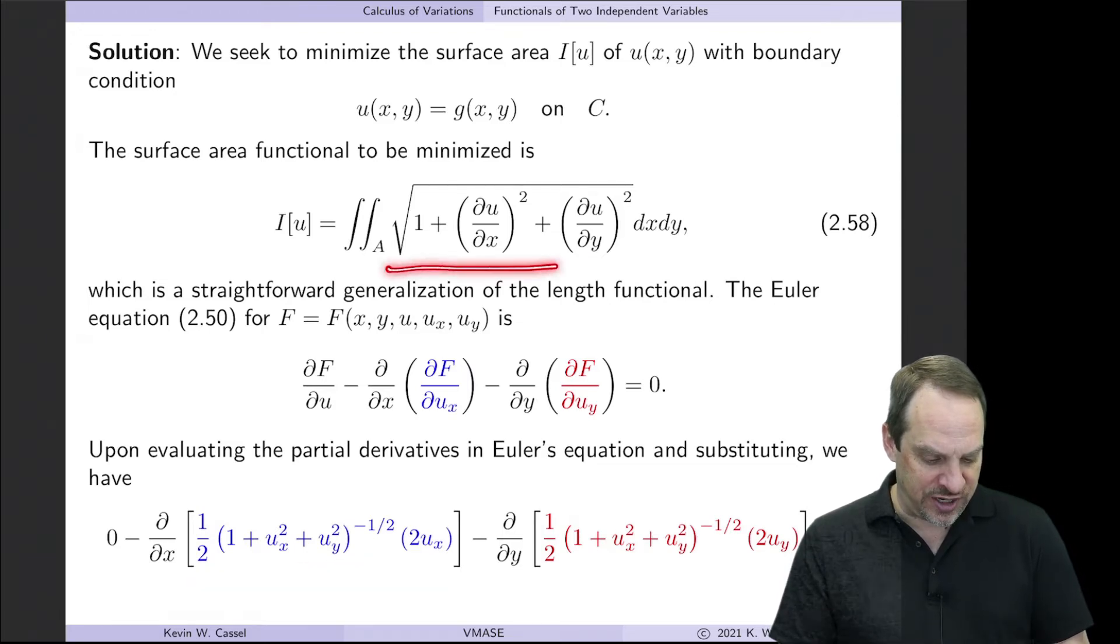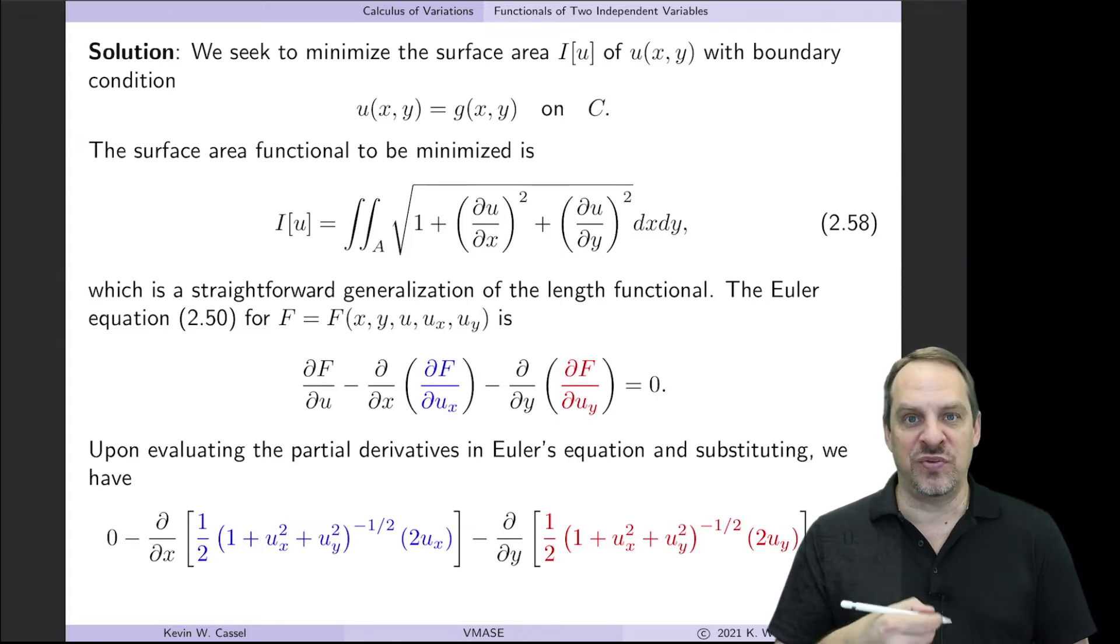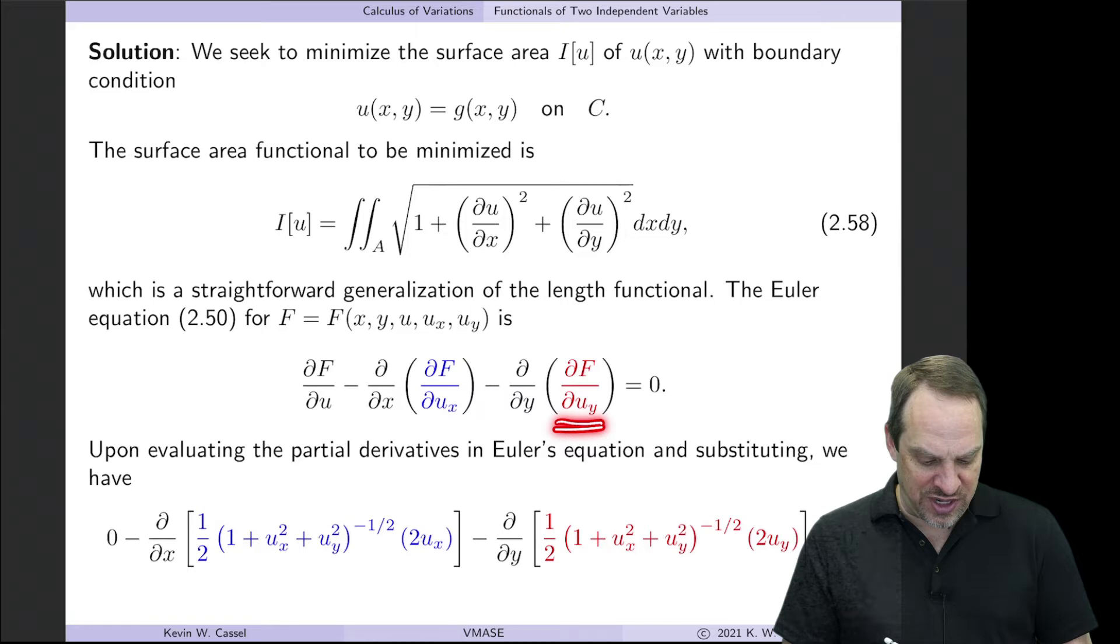So you differentiate the entire square root, so that's one over the square root. And then you differentiate the argument inside the square root. And so that's two times u sub x. Again, partial derivative with respect to u sub x. Then the same idea, but now u sub y, and you get this expression here.